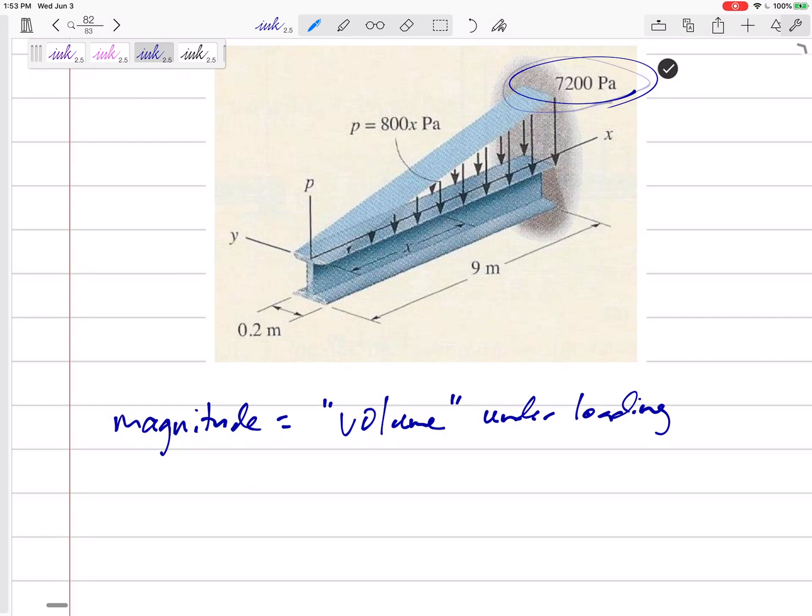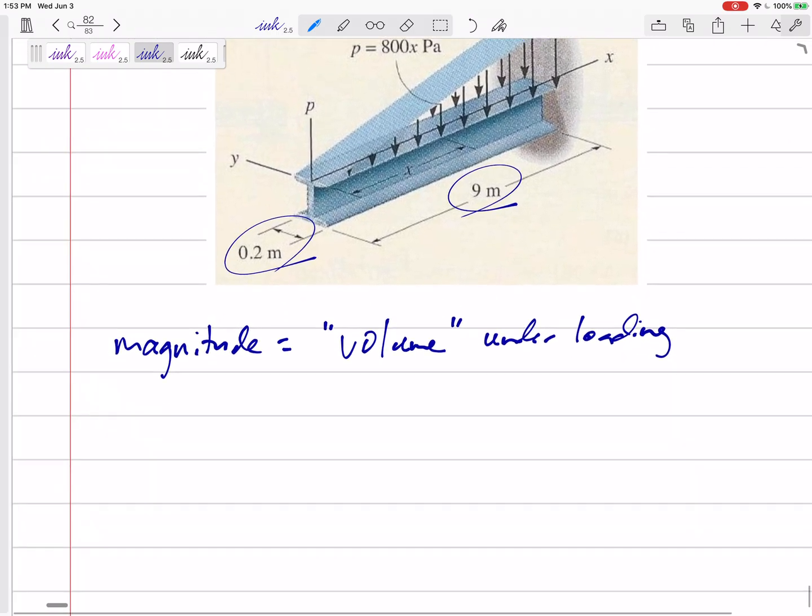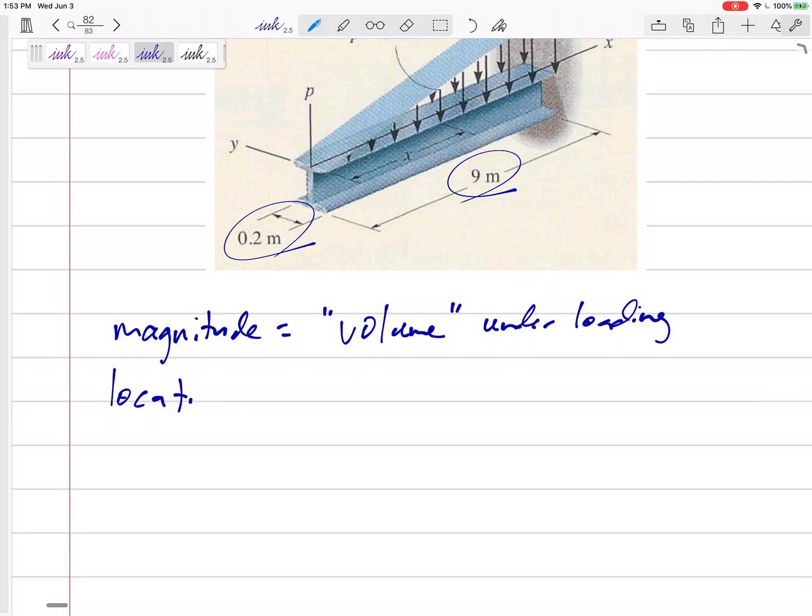And think about that pressure as the height. And then you've got base right here. And is it a cube? That'd be easy. Is it a triangular uniform triangular prism? Is it some sort of pyramid? If you could find the volume under the loading, taking the pressure as the height of that shape, then you could get the magnitude. The location is still the centroid. You can get the centroid of a volume of a three-dimensional object. It's just, where is the center of mass or center of gravity? Where's the centroid of that volume?